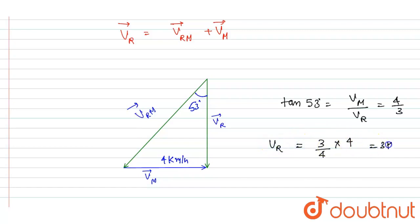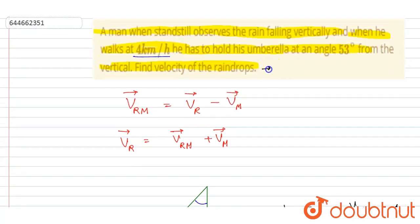And this is the answer of this question. The velocity of the rain with respect to ground is 3 kilometer per hour.